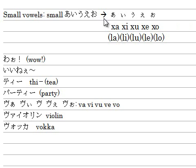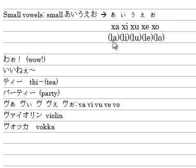So in order to type small A-I-U-E-O, you need to type X-A, X-I, X-U, X-E, X-O. Or alternatively, L-A, L-I, L-U, L-E, L-O. Either way works.